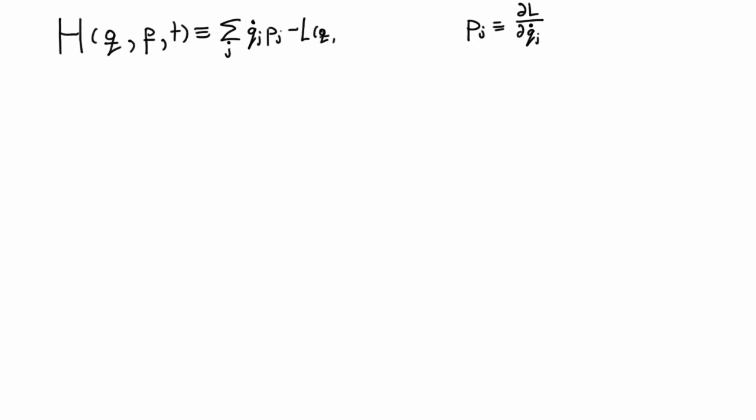And remember, the Lagrangian is defined in terms of q's and q dots, so when you write it this way, you actually have to convert your coordinates from q dots back to the p's, and they will be related through that. So that's the definition of our Hamiltonian.